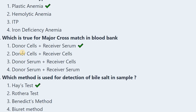Next question: Which is true for major cross match in blood bank? The options include various combinations of donor/receiver cells and serum. In major cross match, the donor's cell is taken and the receiver's serum is used.